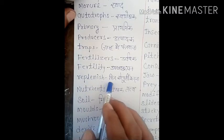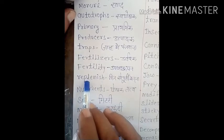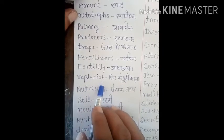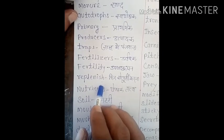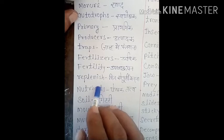Next word is 'replenish', R-E-P-L-E-N-I-S-H. Replenish means 'phir se poorti karna'. Jaise aapki book mein sentence hai: 'Sometimes the soil loses its fertility due to different reasons, so to replenish the fertility of the soil' — thik hai, as tarah ka ek sentence hai.